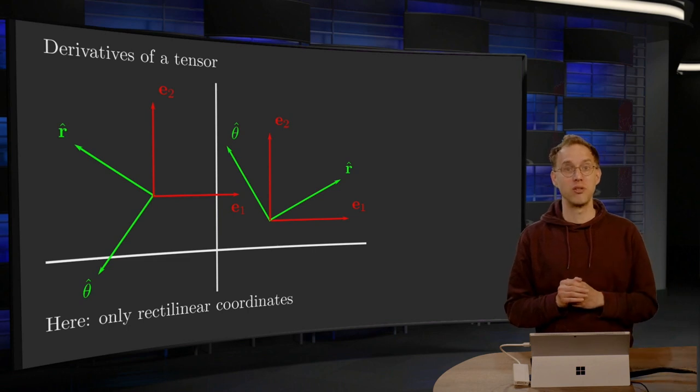So that's what we are going to do for now. We will see how tensors can be differentiated in the rectilinear case, and we will learn how we can generalize the divergence theorem in this case.